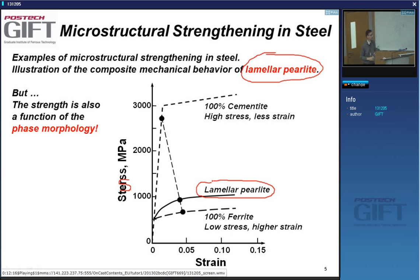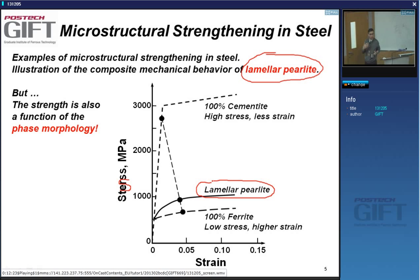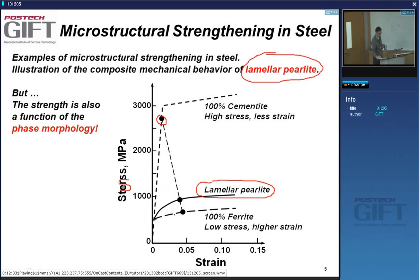You will have very high stresses in the hard phase — in the cementite — and very low stresses in the ferrite. But the ferrite will do the deformation.